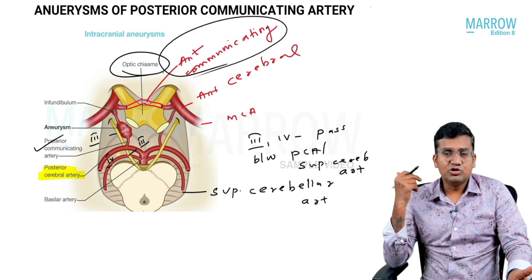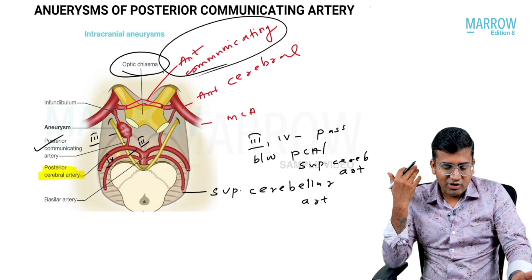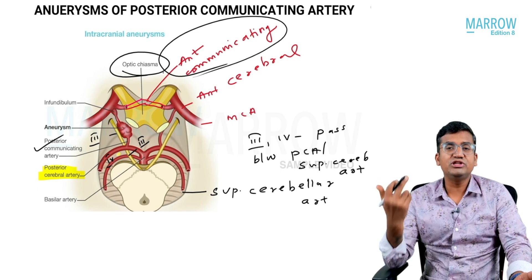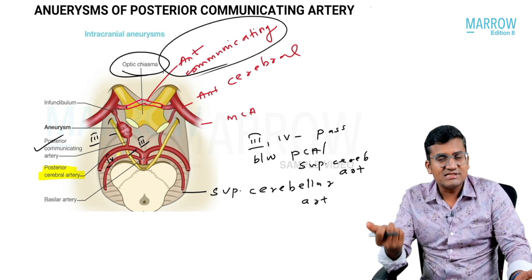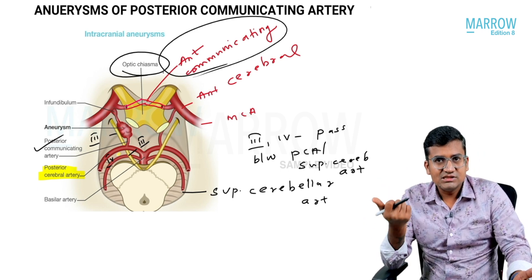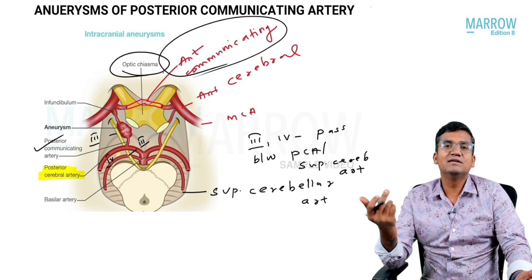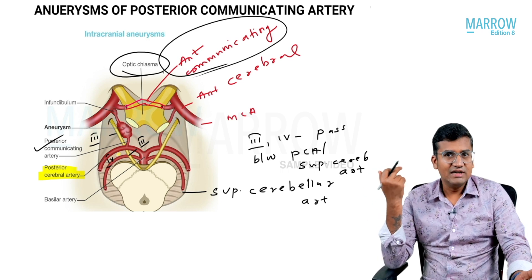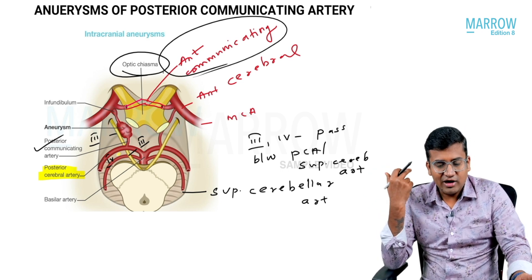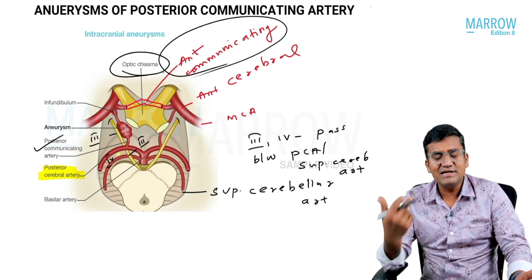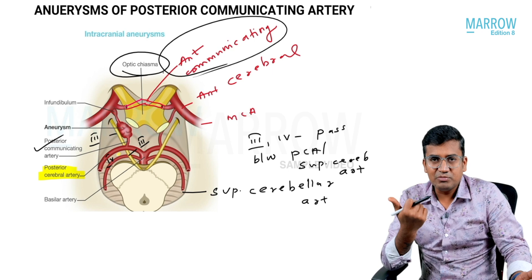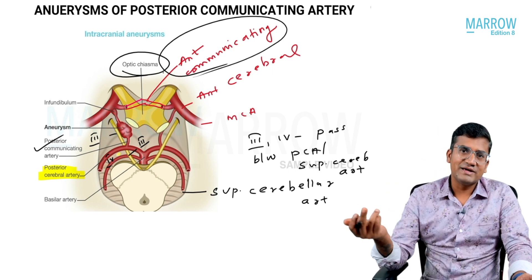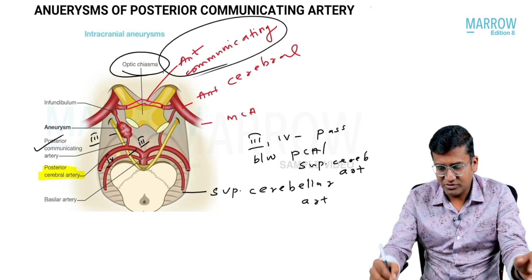In the case of aneurysm of the posterior communicating artery, the oculomotor nerve is compressed. In the case of aneurysm of the anterior communicating artery, the optic chiasma is compressed.